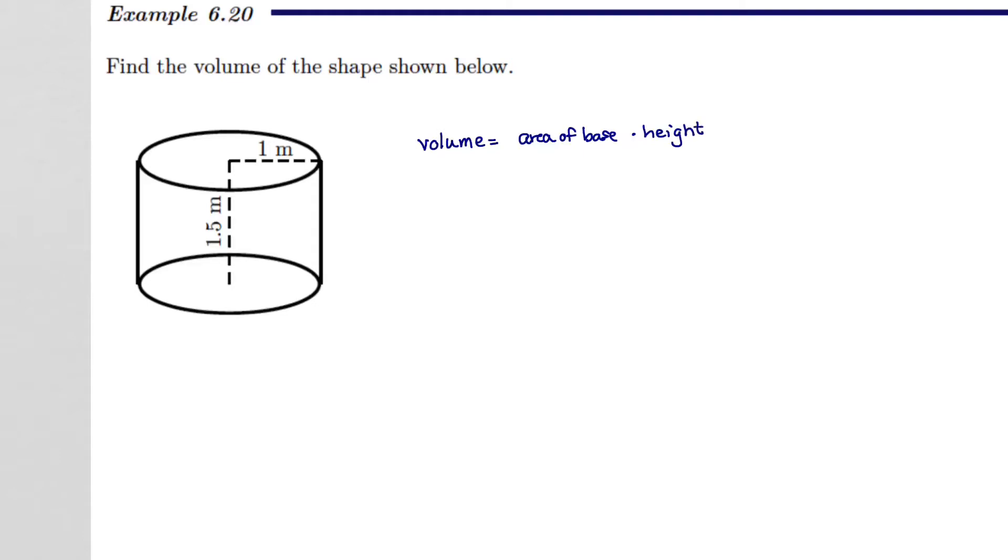So, specifically, our base is a circle. And so, because our base is a circle, we're looking for the area of the circle, which is going to be pi times our radius squared.